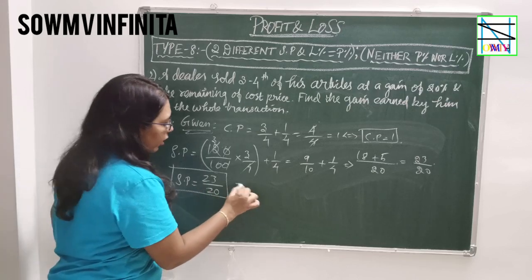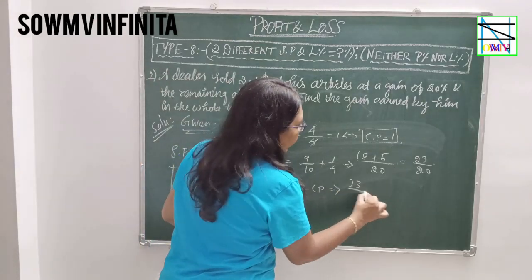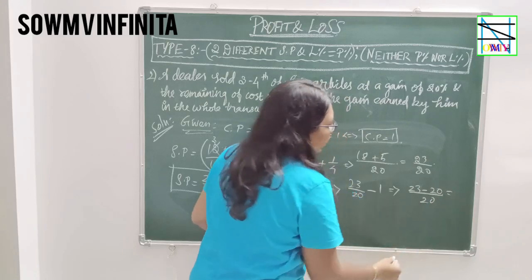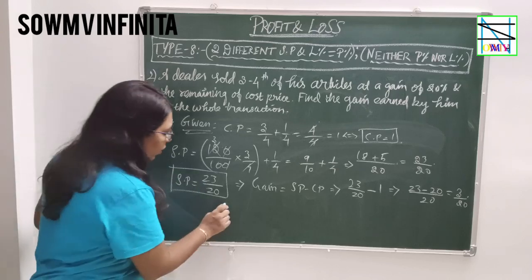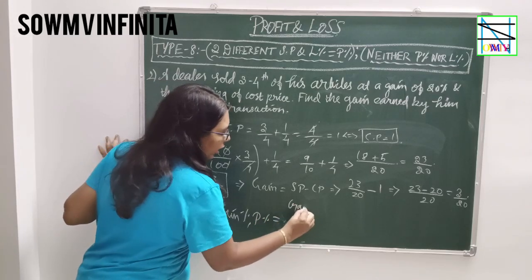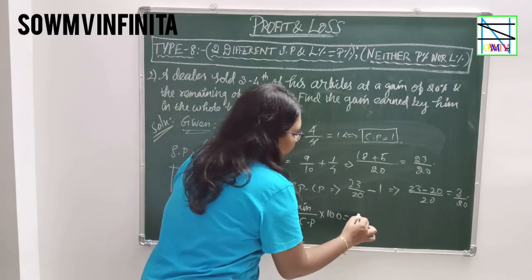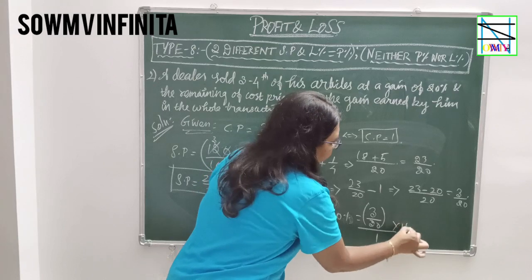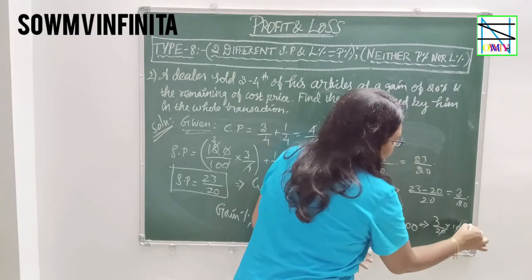We can find the gain value. Gain = SP − CP. Therefore, 23/20 − 1 = (23 − 20)/20 = 3/20. Now we convert this to gain percent. Gain Percent (Profit Percent) = (Gain / CP) × 100. Here gain is 3/20, cost price is 1, so: (3/20) × 100.